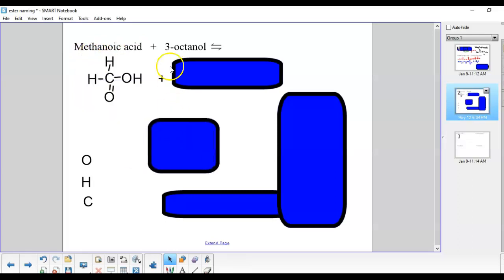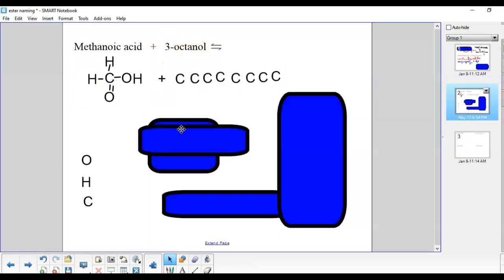Let's take a look at a little more complicated stuff here. Methanoic acid—meth, one carbon long—plus 3-octanol. Oct is eight. The OH is on carbon number three. So where should I put the OH here? Well, let's put the OH one, two, three.